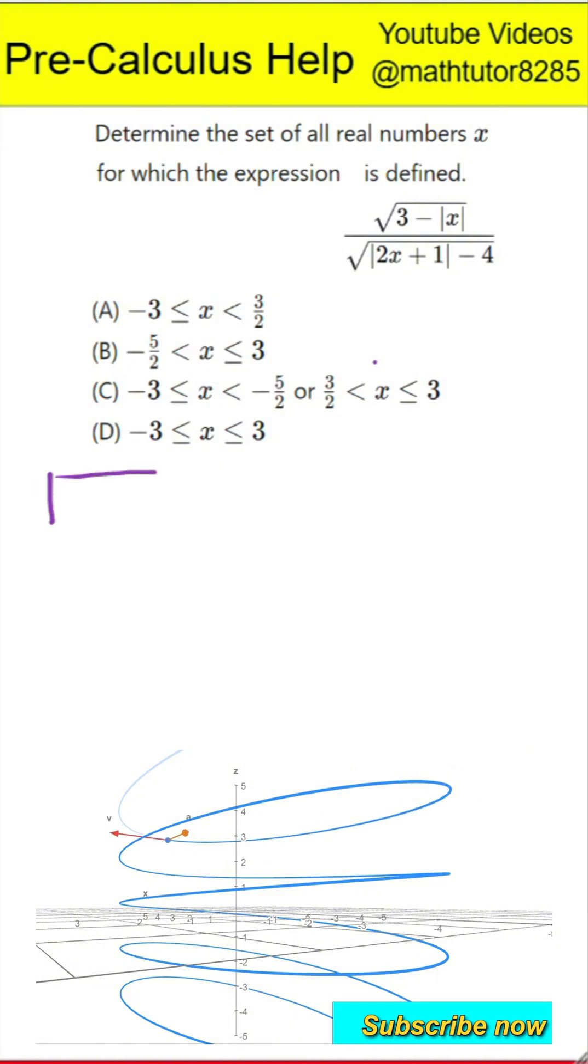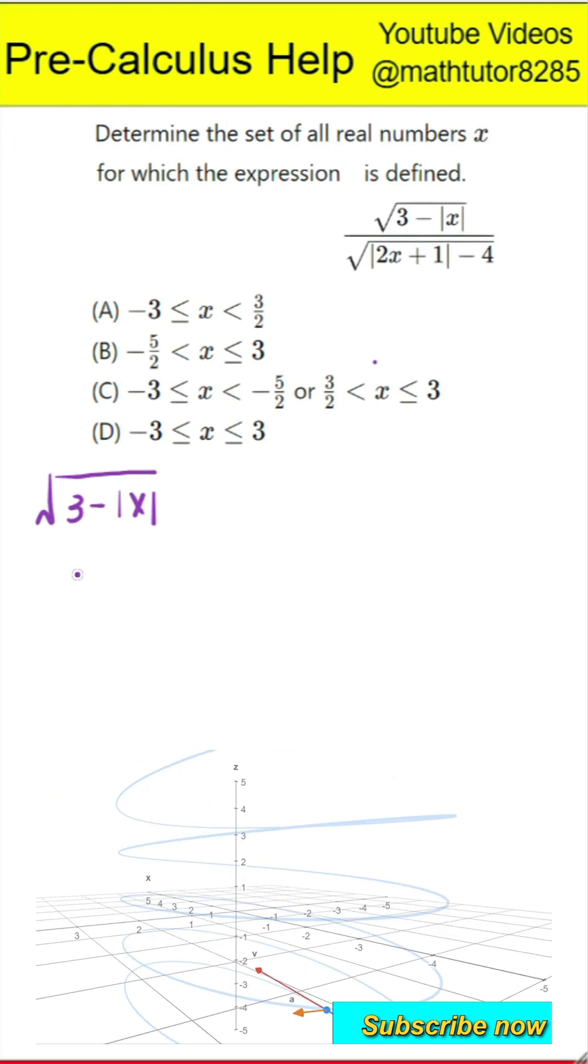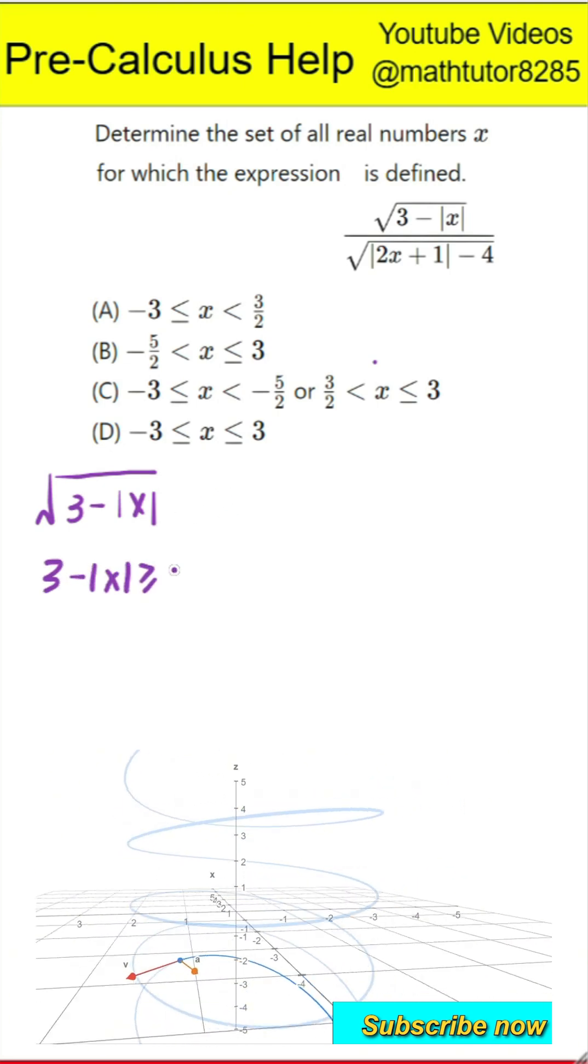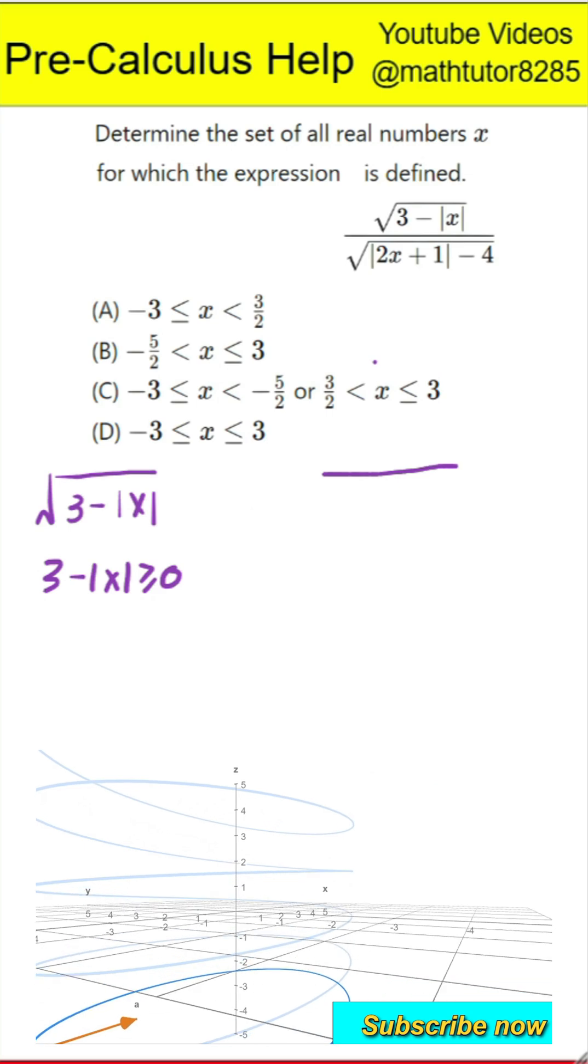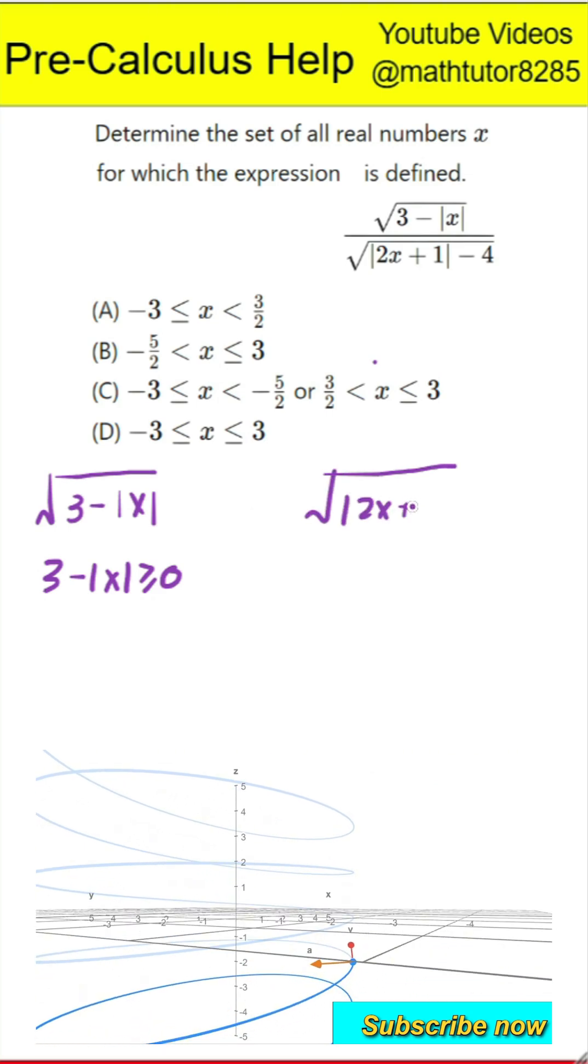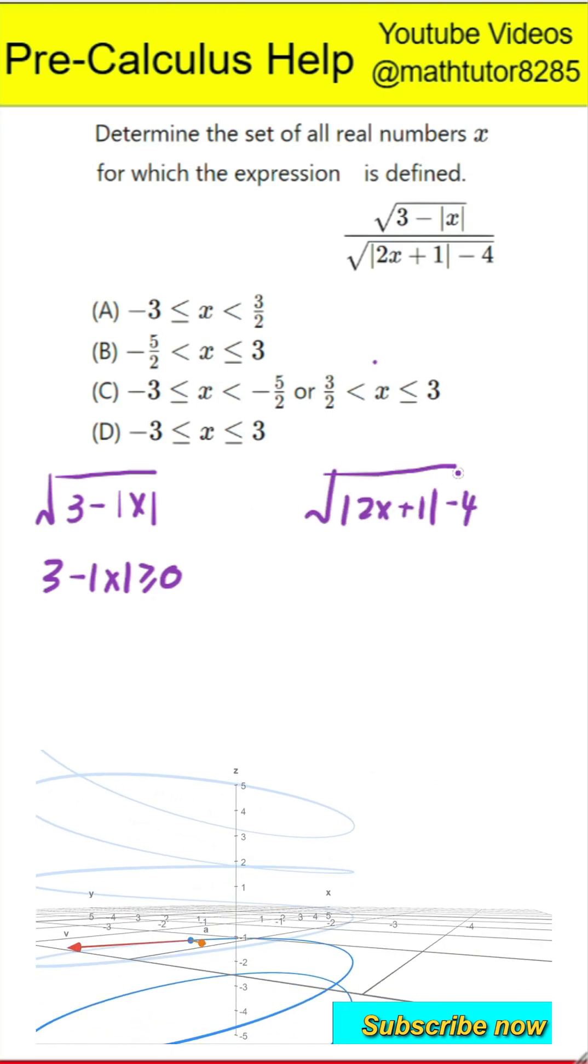First step is to understand what makes the expression meaningful. For the entire expression to make sense, the part under the square root in the numerator, which is 3 minus the absolute value of x, must be greater than or equal to 0. This tells us that the absolute value of x must be less than or equal to 3.